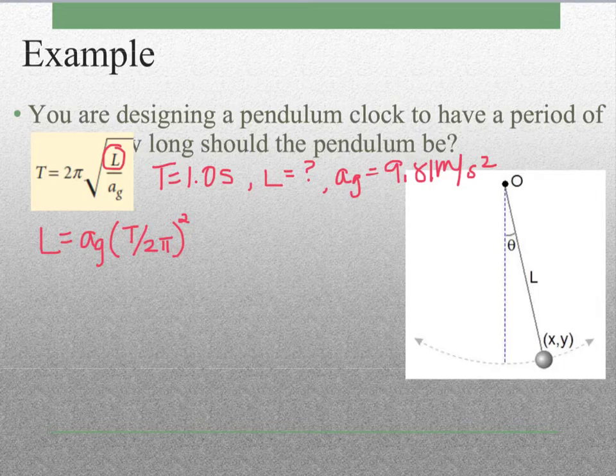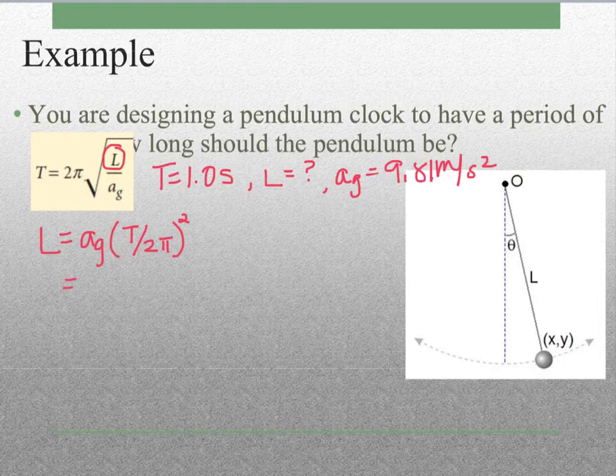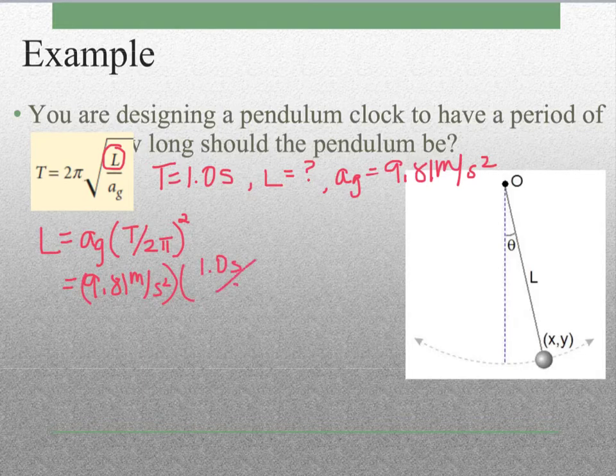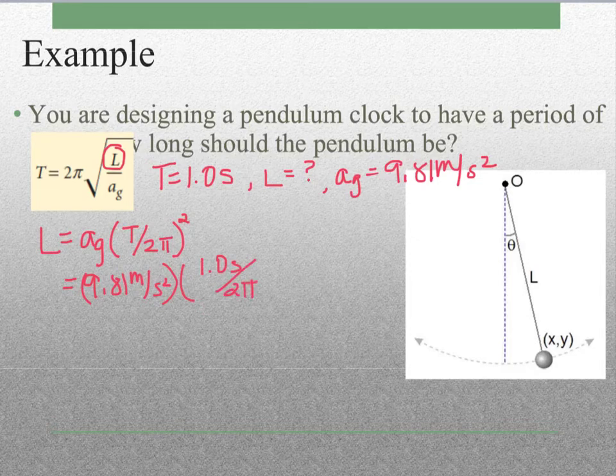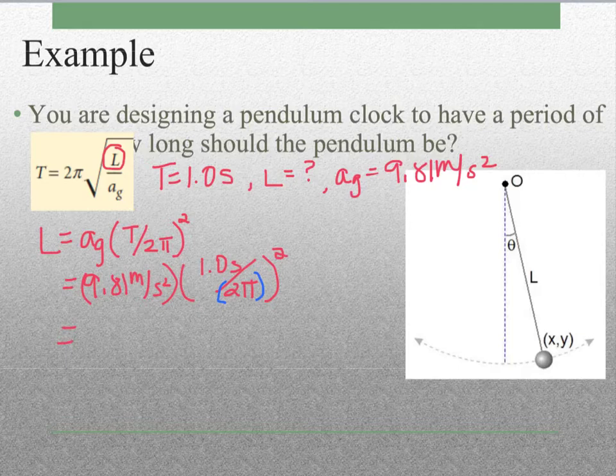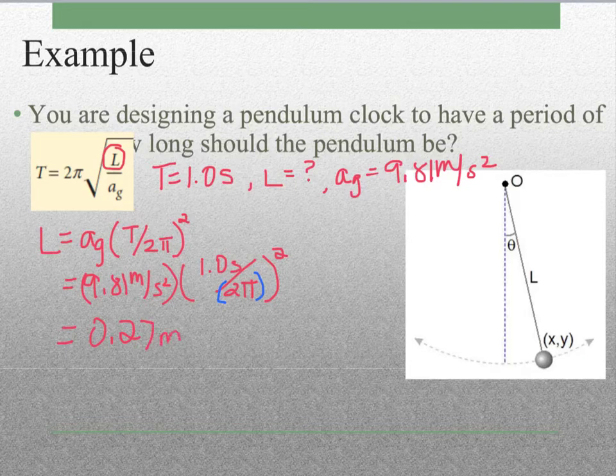Now I just need to plug in the information and solve. I've got my acceleration of gravity. I have my period, which is 1 second, divided by 2π. Make sure if you're plugging this in on your calculator, you put parentheses around that so that it comes out correctly. Then we will need to square that. When I plug it into my calculator, I find out that the length of our pendulum should be 0.27 meters.